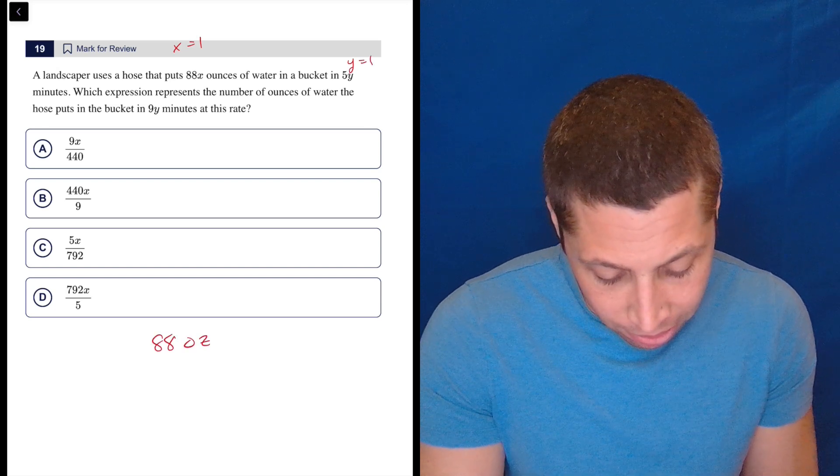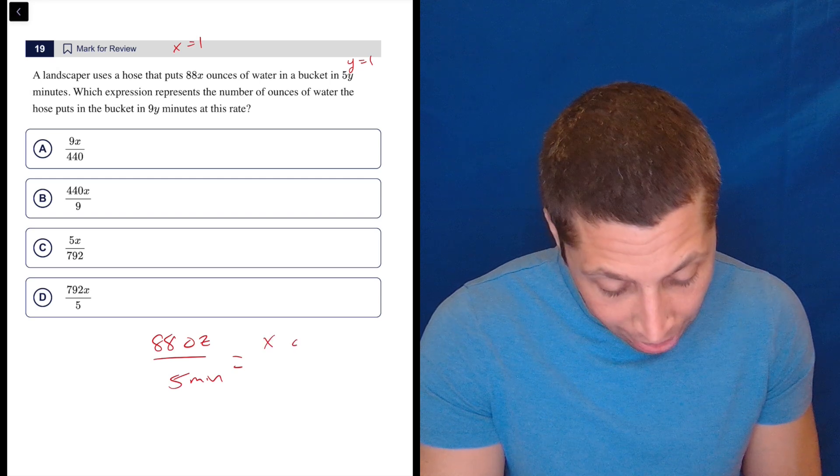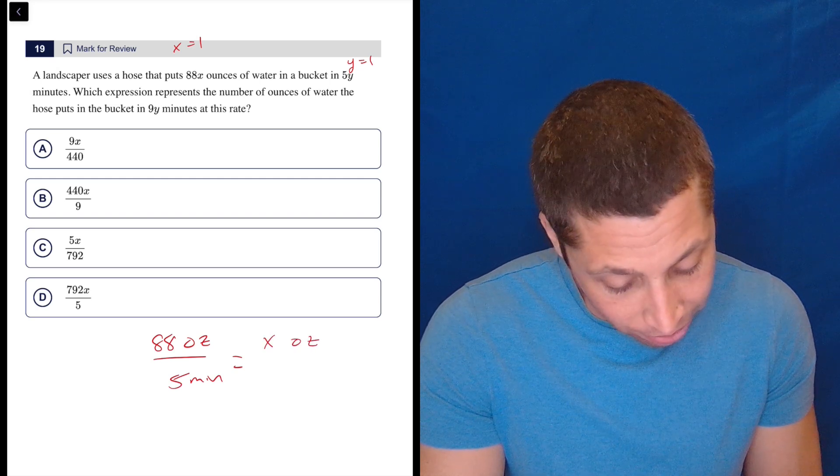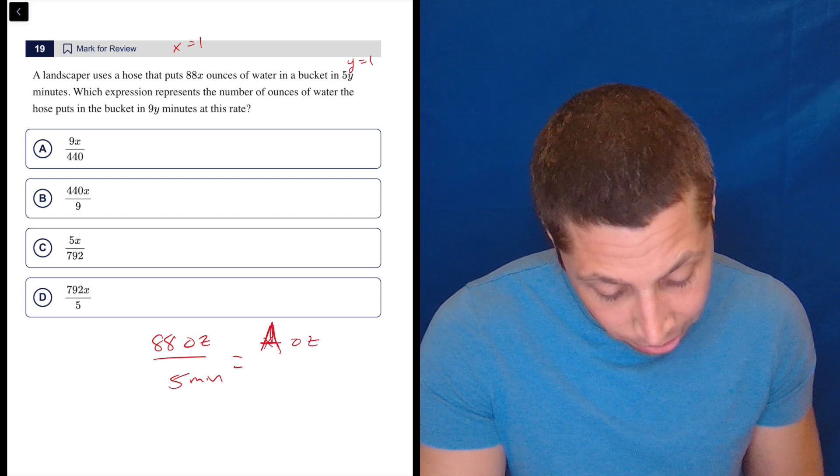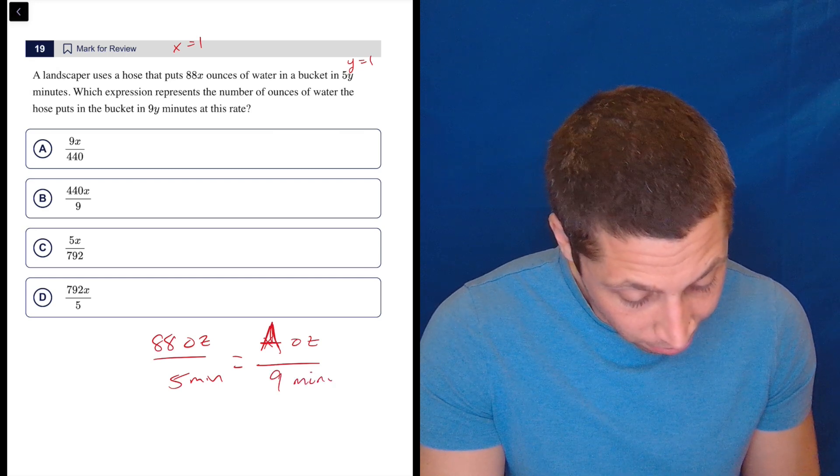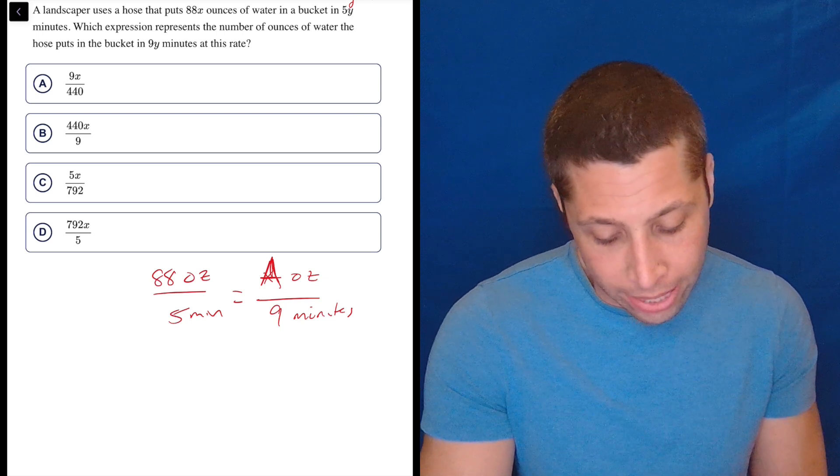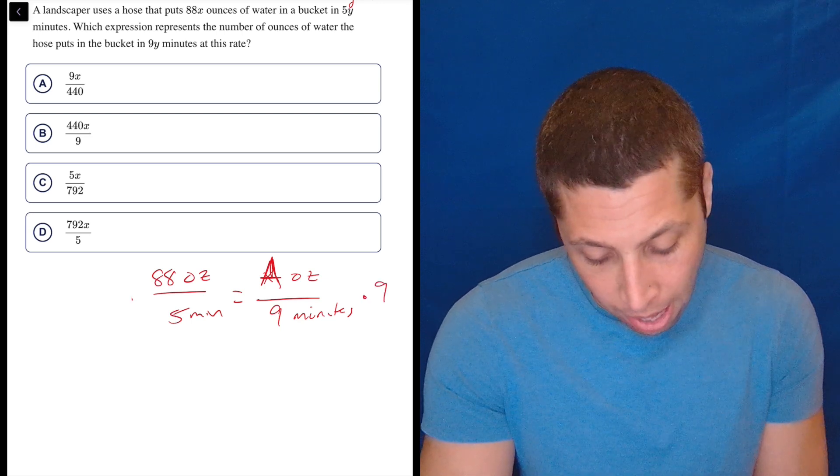So that's 88 ounces in 5 minutes. And they want to know how many ounces, let's not do X, let's do A ounces in 9 minutes. Okay, I don't know, cross-multiply and divide, or we don't even need to cross-multiply. 88 divided by 5 times 9.